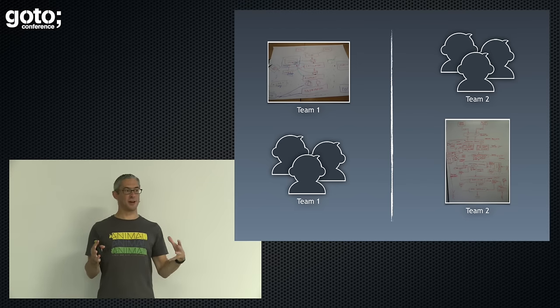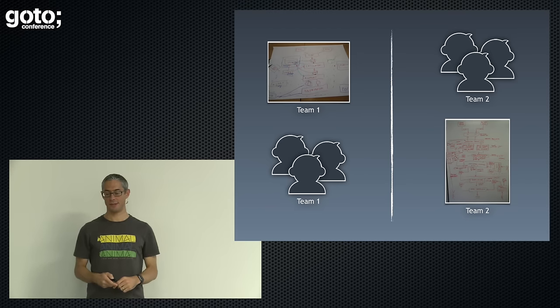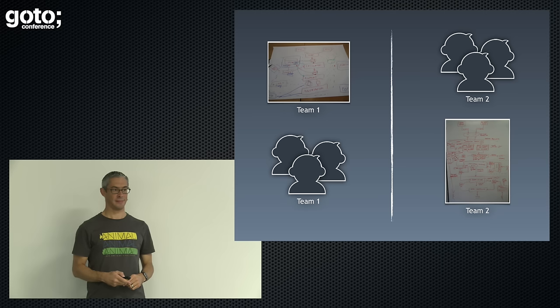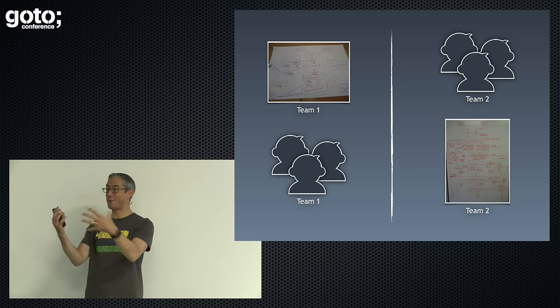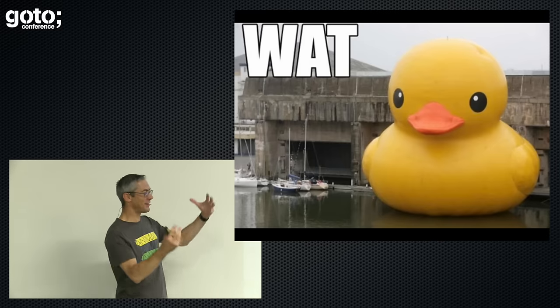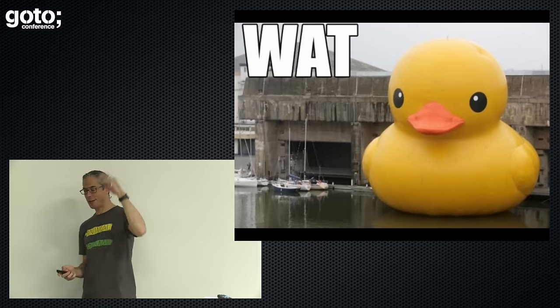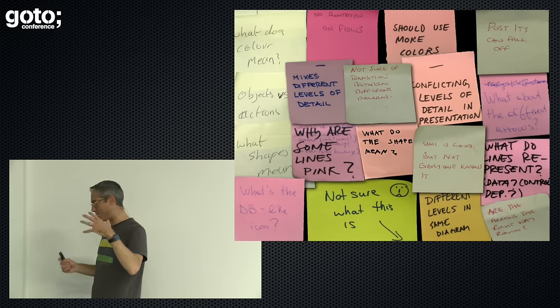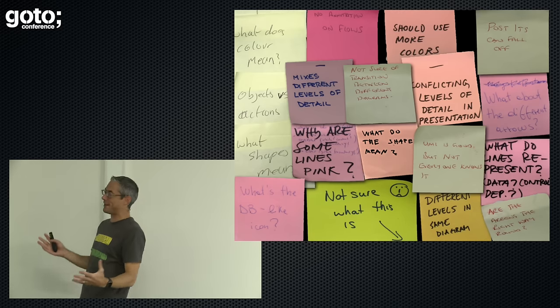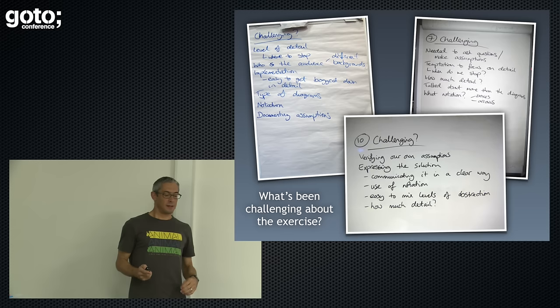That's fine, but we don't always present our diagrams. If we're drawing a picture of our system, we don't always stand there and present it. A nasty trick I like to do is have two teams swap diagrams. Because they weren't part of the conversation creating those diagrams, they have no idea what's going on. The color coding, shapes, and lines — basically none of the notation elements make any sense whatsoever.